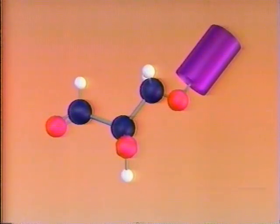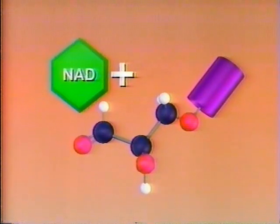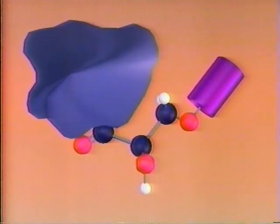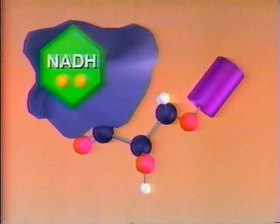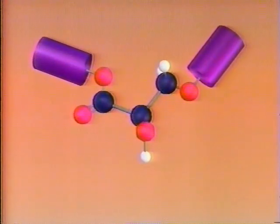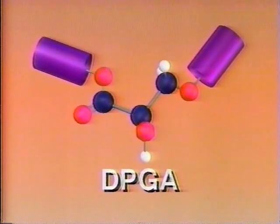In reaction six, NAD+ saddles a molecule of PGAL, and with the aid of an enzyme, NAD+ picks up two electrons and a hydrogen ion. The product is an energy-rich NADH. In this exchange, PGAL grabs a free phosphate to form diphosphoglycerate, or DPGA.